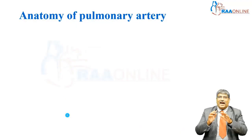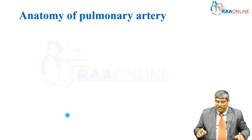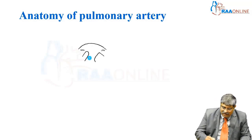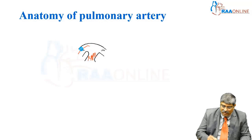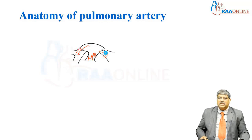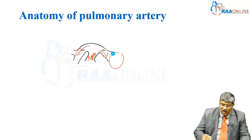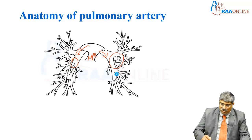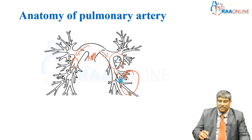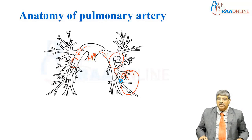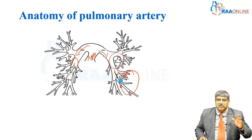Coming to the anatomy of the pulmonary artery: this is the MPA which divides into right pulmonary artery and left pulmonary artery. Then you have the lobar arteries coming into picture, and later you have segmental and subsegmental artery. This is the normal anatomy of the pulmonary circulation.